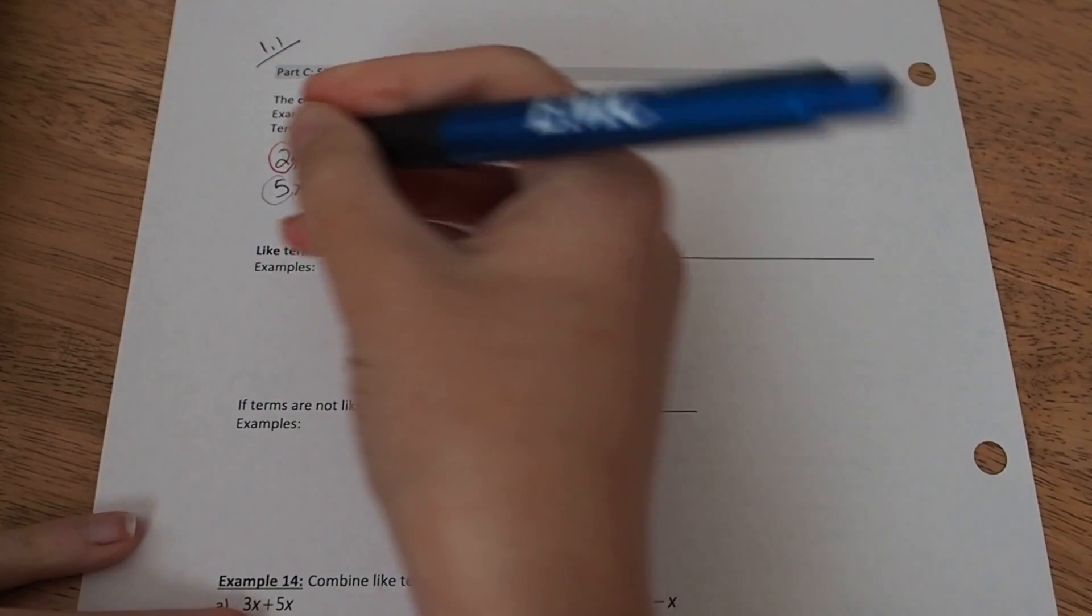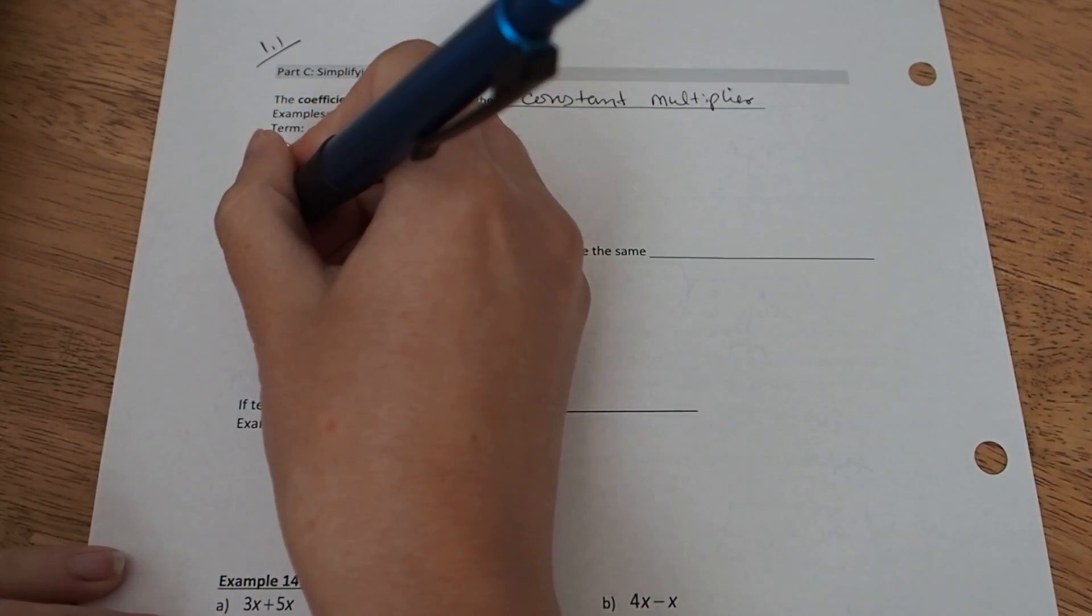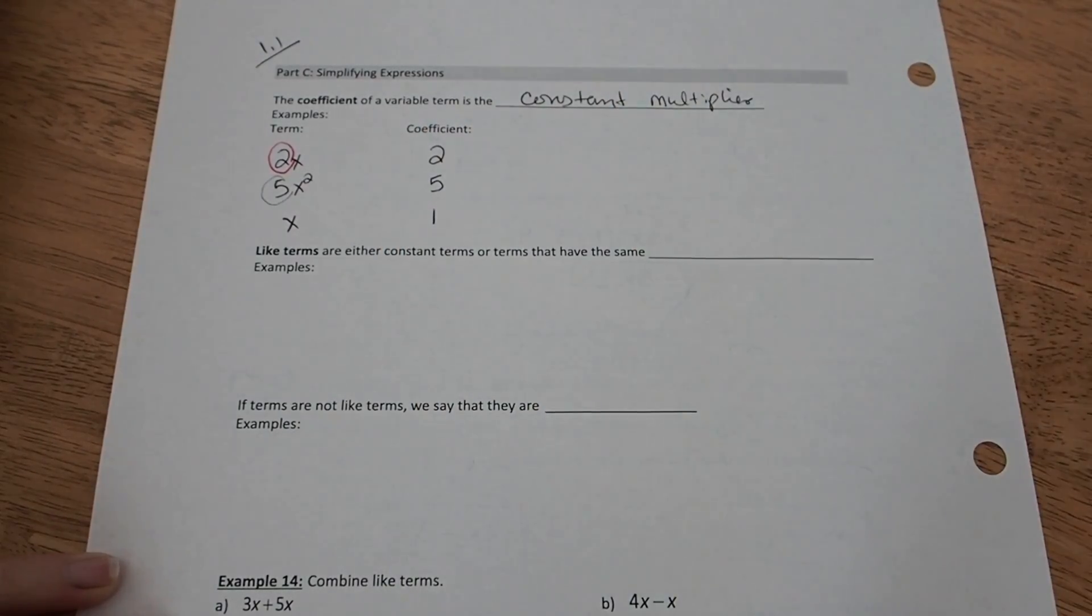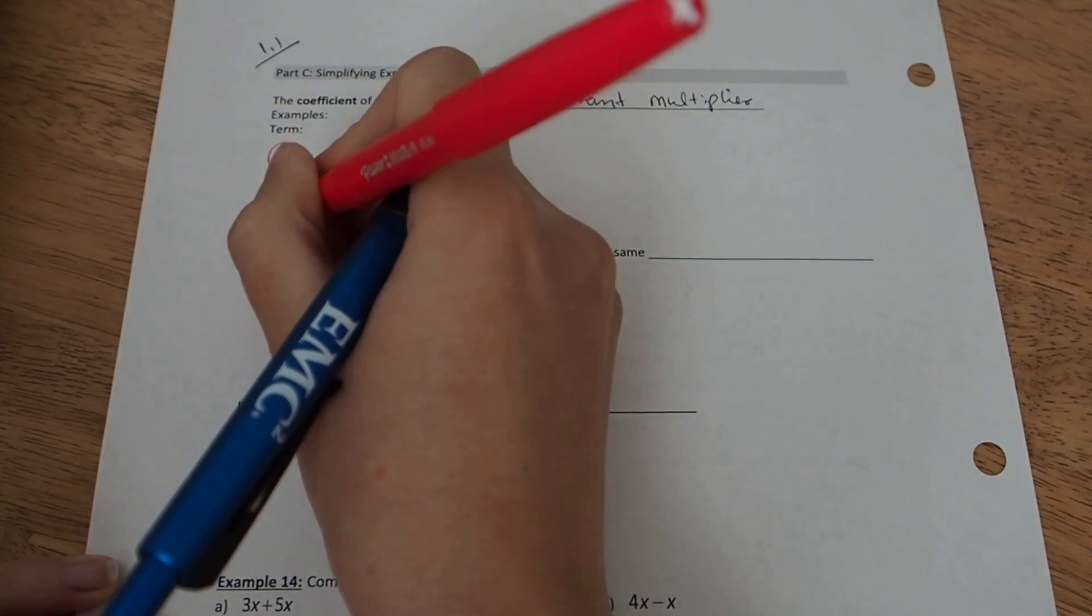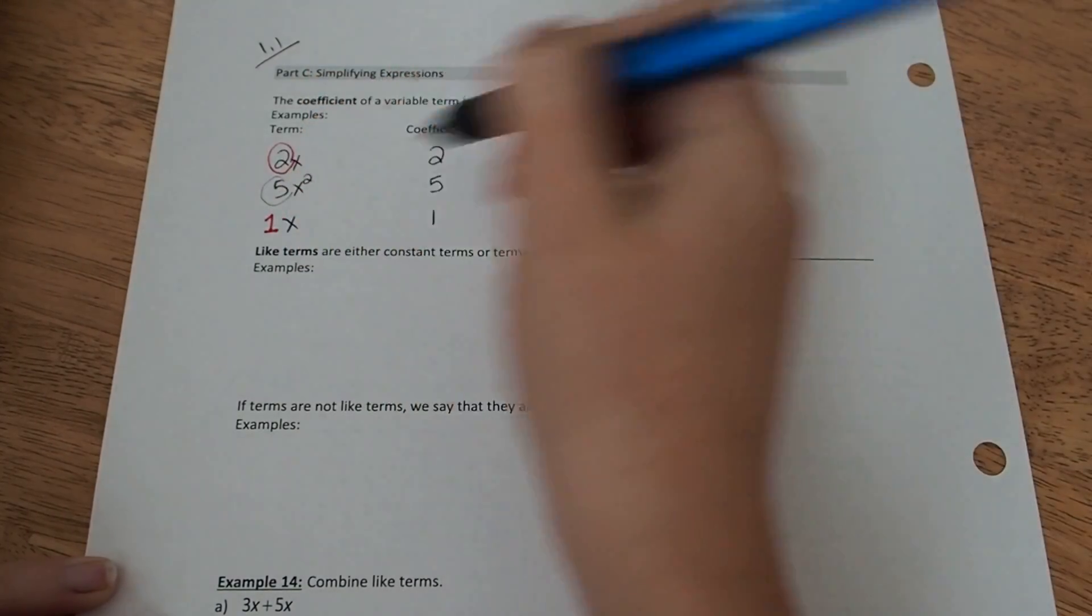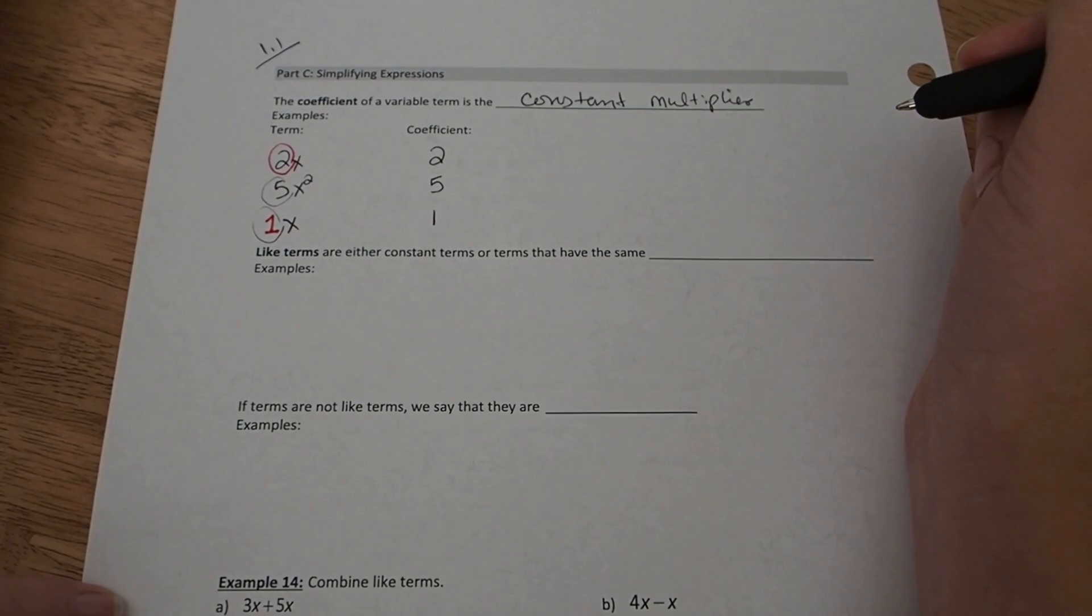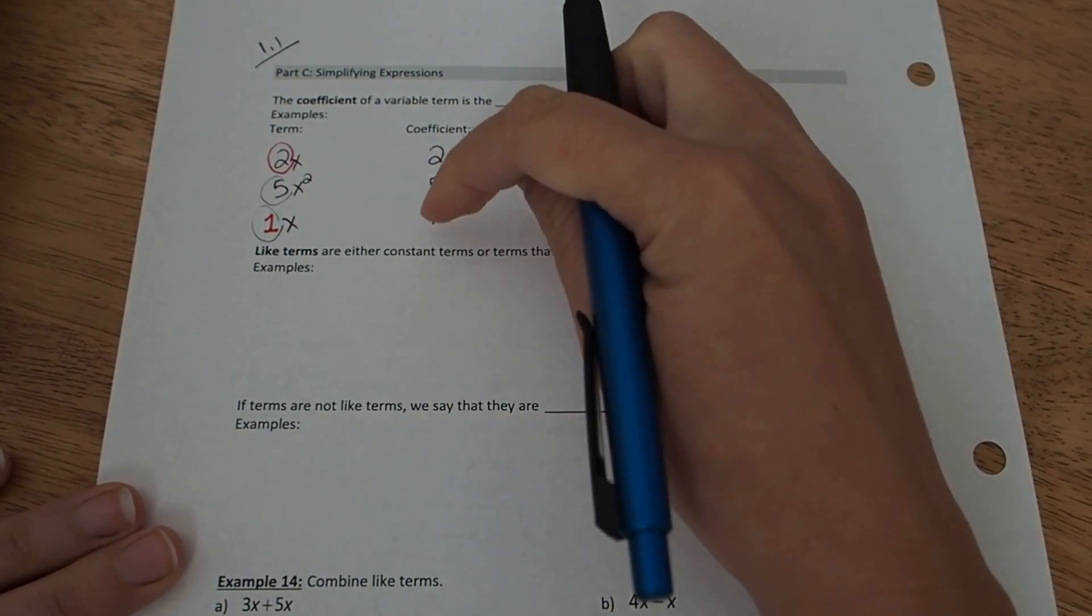If I have a term like x, its coefficient is going to be 1 because there's going to be something known as the invisible 1 in front of the x. 1x is the same thing as just x. So again, the coefficient of plain variable is going to be 1.